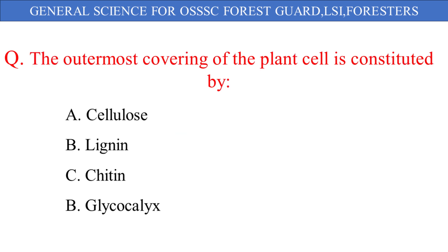The outermost covering of the plant cell is constituted by: A. Cellulose, B. Lignin, C. Chitin, D. Glycocalyx. And the correct answer is option A: Cellulose.